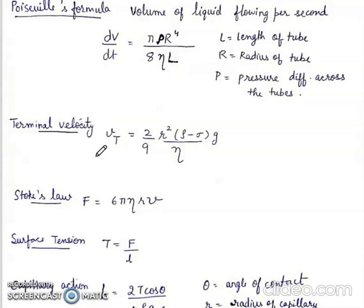Terminal velocity Vt is equal to 2 by 9. R squared rho minus sigma g upon eta. Stokes law F is equal to 6 pi eta R v.